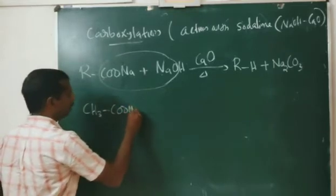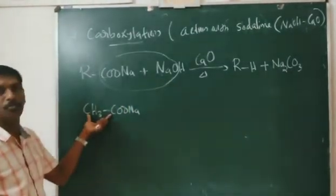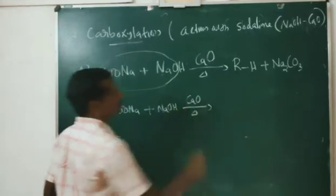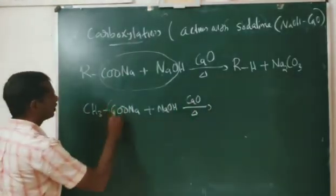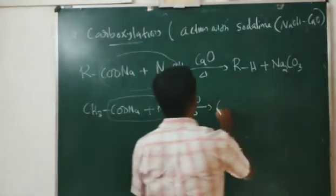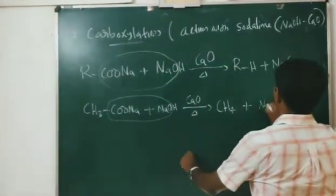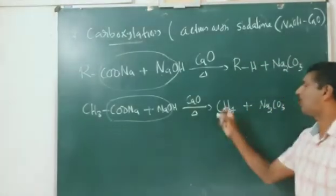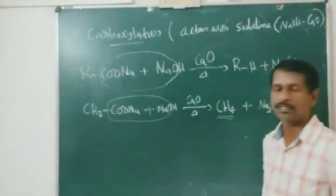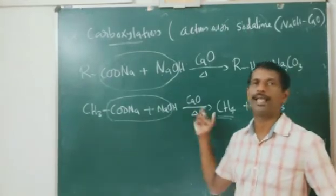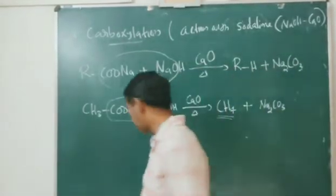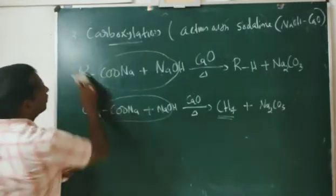For a specific example: CH₃COONa, the sodium salt of acetic acid which contains two carbons. When treated with NaOH and CaO (soda lime), Na₂CO₃ is eliminated. The CH₃ group joins with H and we get methane, CH₄, plus Na₂CO₃. The alkane methane contains only one carbon, while the starting carboxylic acid had two carbons. This reaction is known as the decarboxylation reaction.